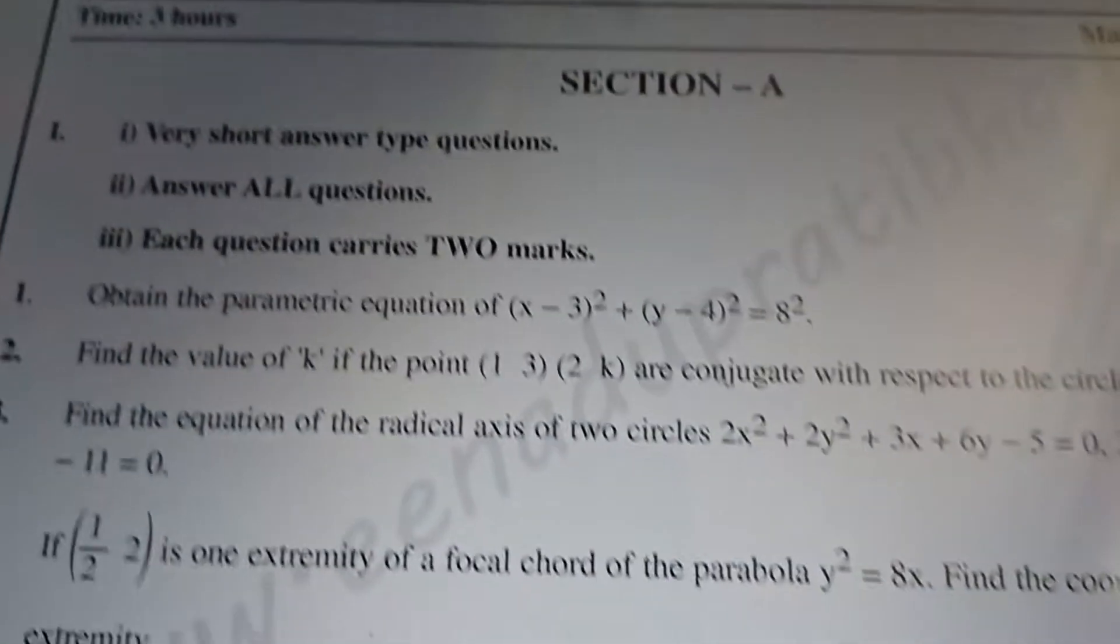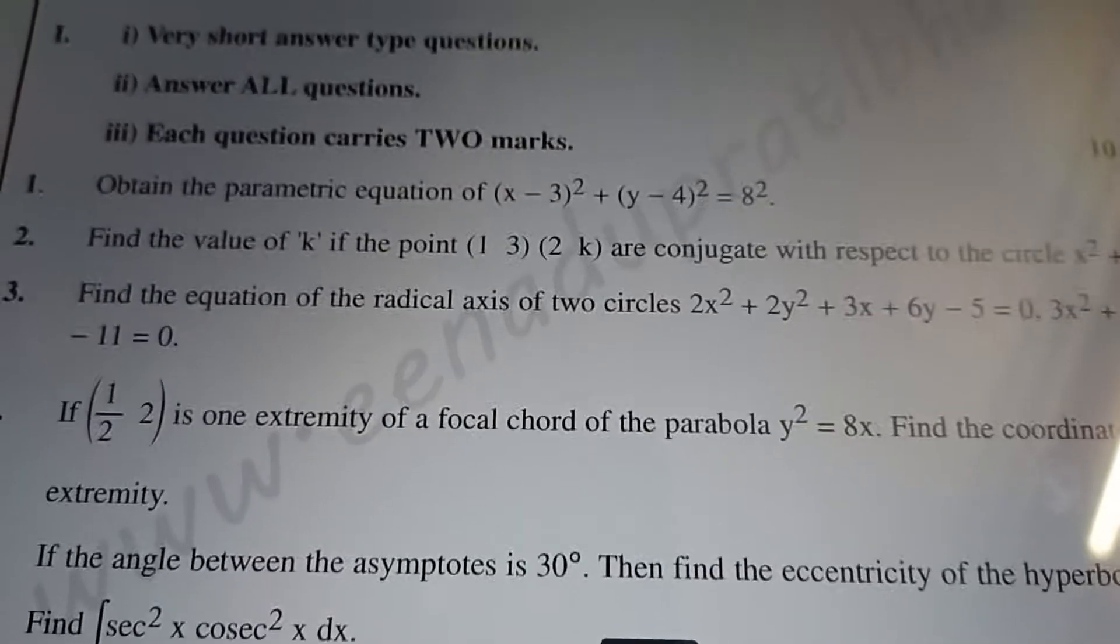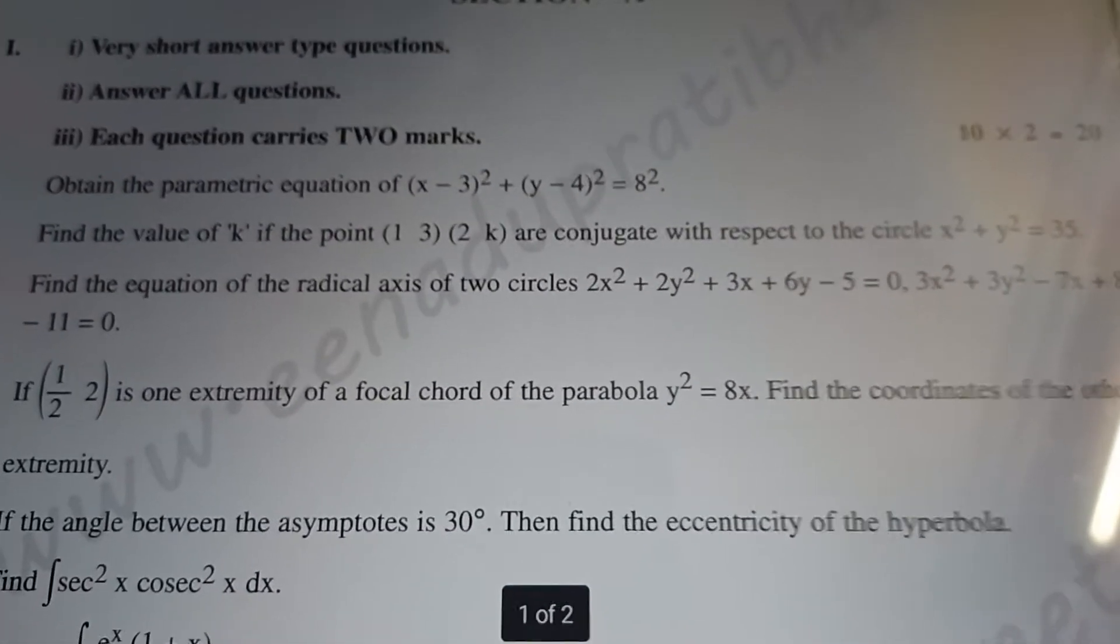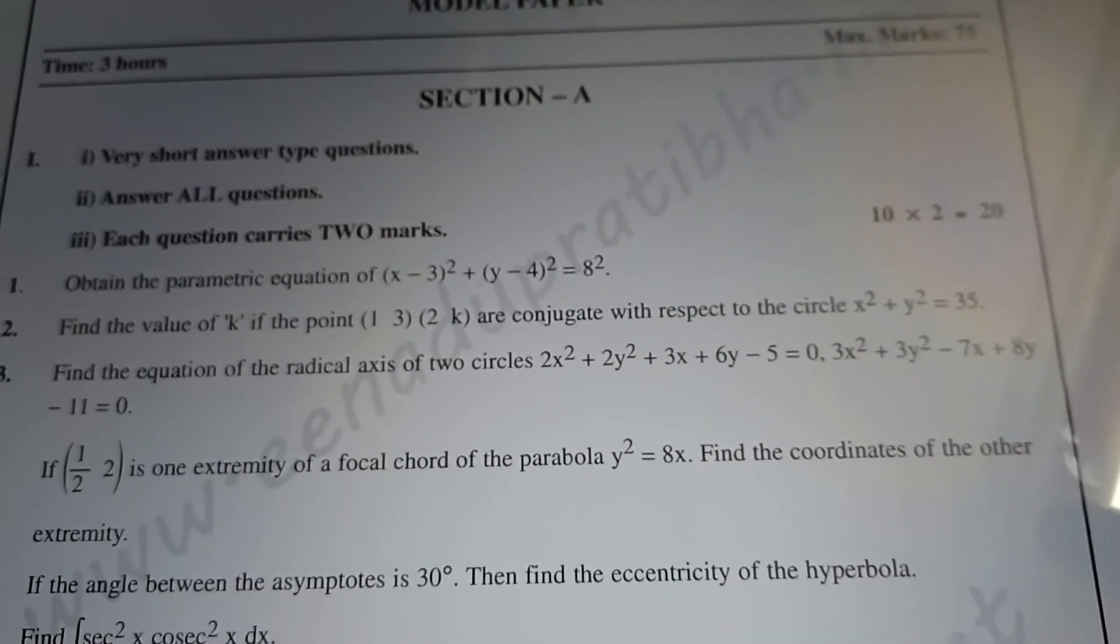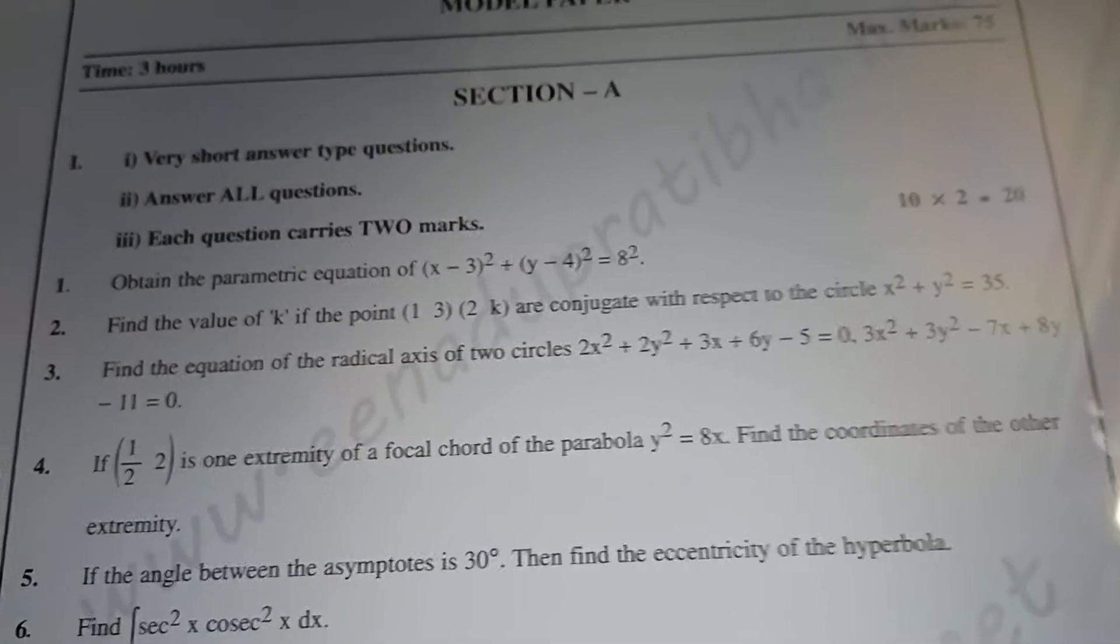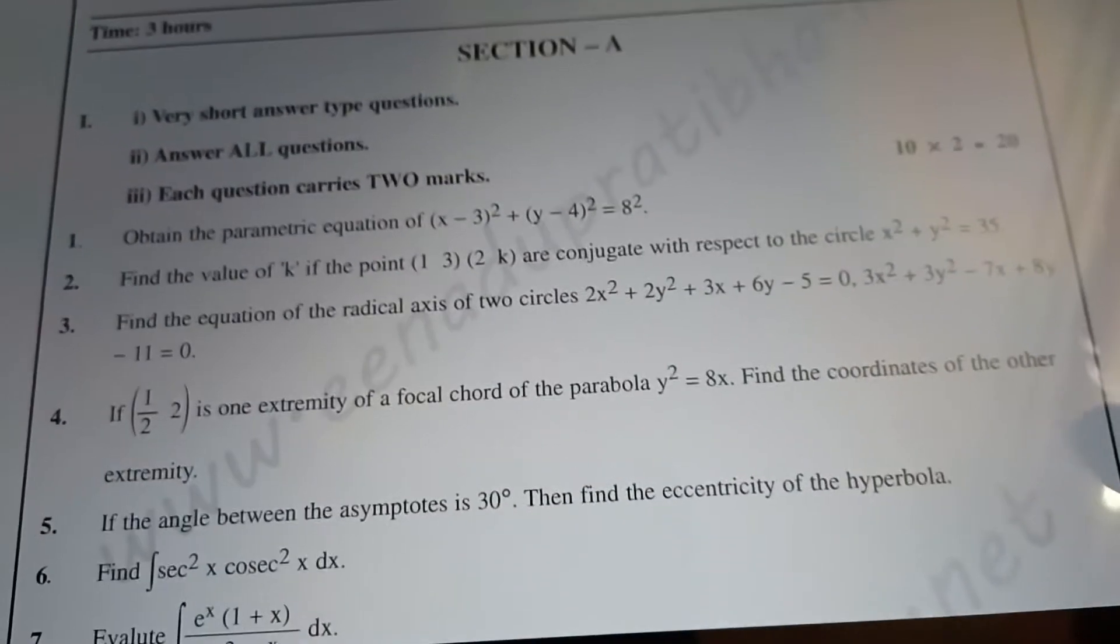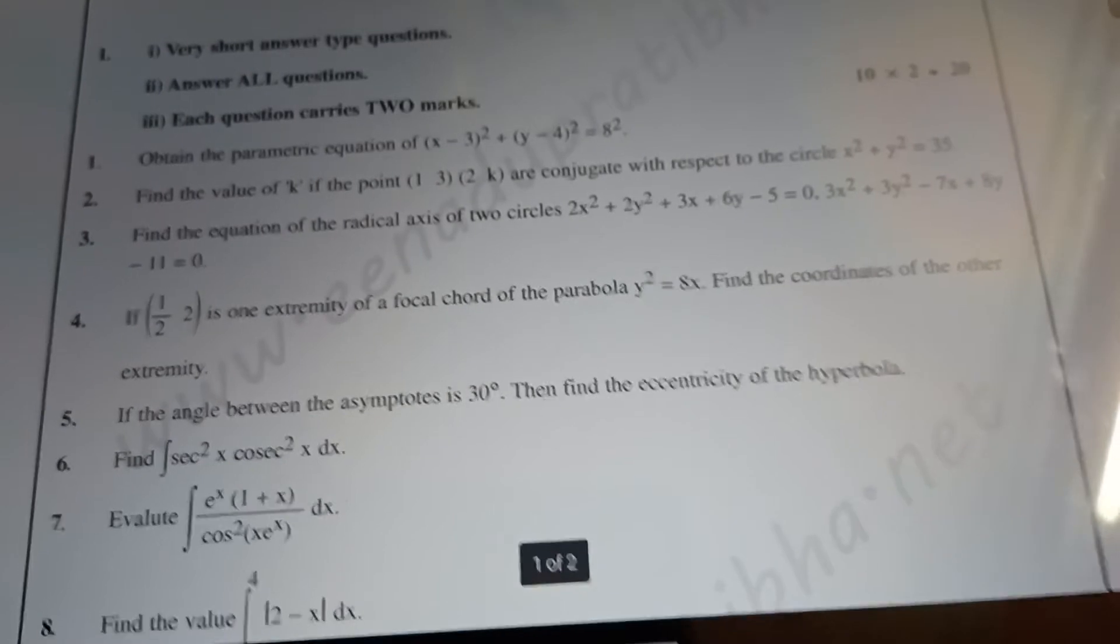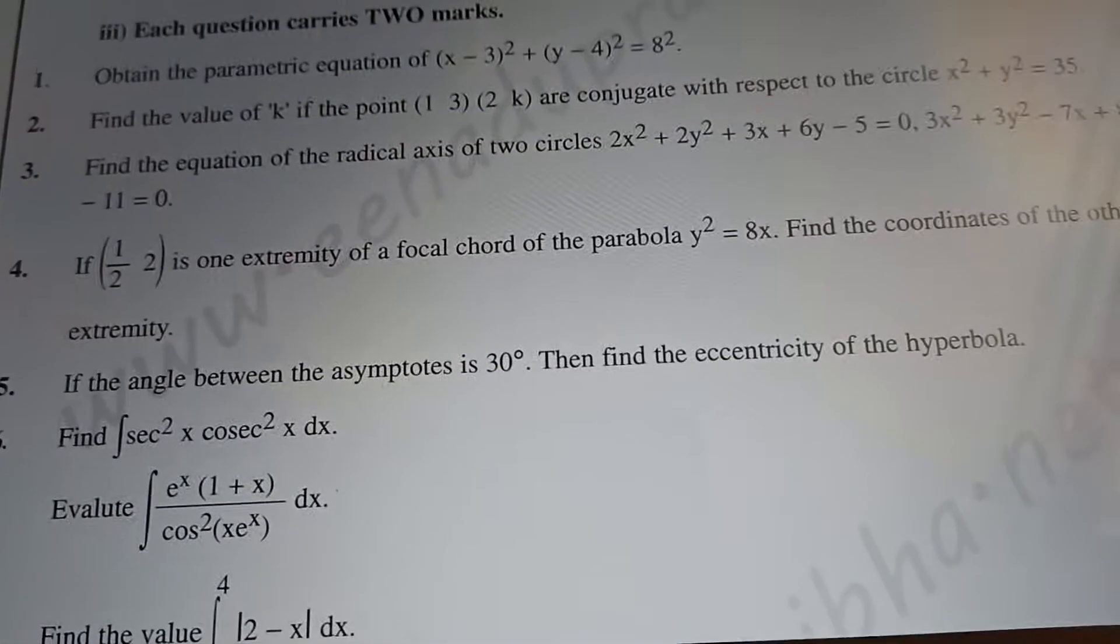Yeah, 2B model paper. Obtain the parametric equations. Find the value of K if the point 1, 3i, 2, k are conjugate with respect to the circle. Next, find the equation of the radical axis. Find the other extremity. S minus S dash equal to 0. One extremity is given, then find the other extremity. This is most important. When angle between asymptotes is 60 degrees, then find the eccentricity of the hyperbola.